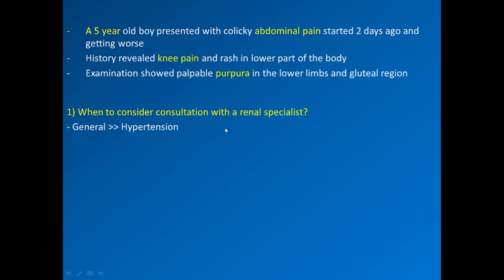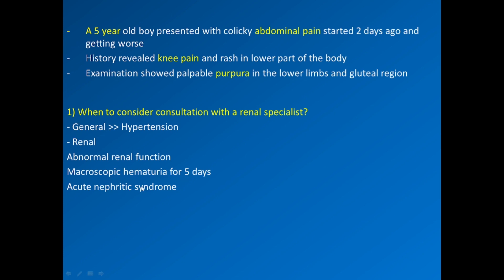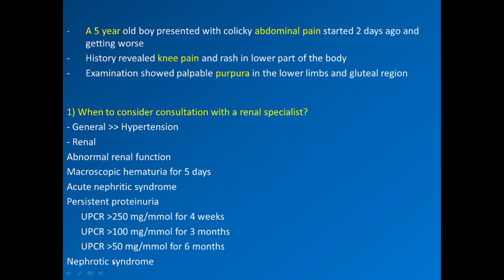Indications for renal specialist consultation include: hypertension; abnormal renal function; macroscopic hematuria lasting five days or acute nephritis; and persistent proteinuria — defined as a urine protein-creatinine ratio greater than 250 mg/mmol for four weeks, more than 100 mg/mmol for three months, or more than 50 mg/mmol for six months — or nephrotic syndrome.